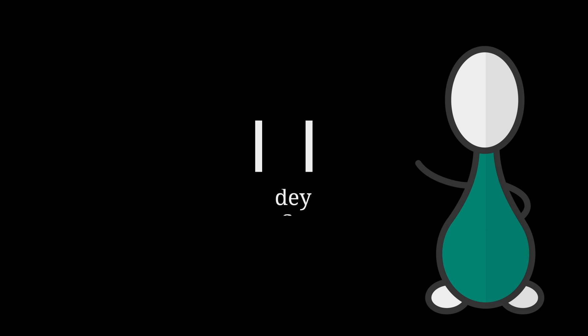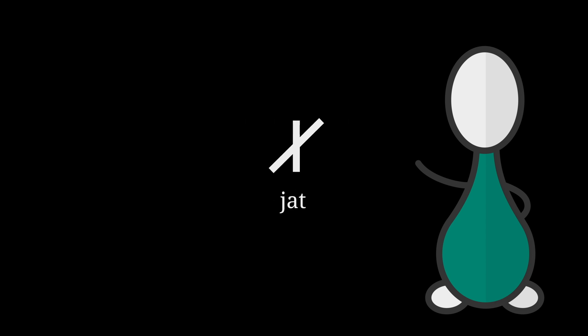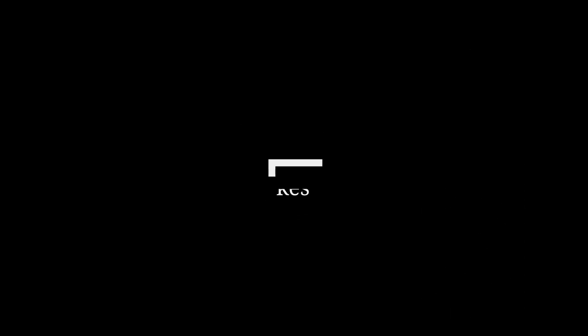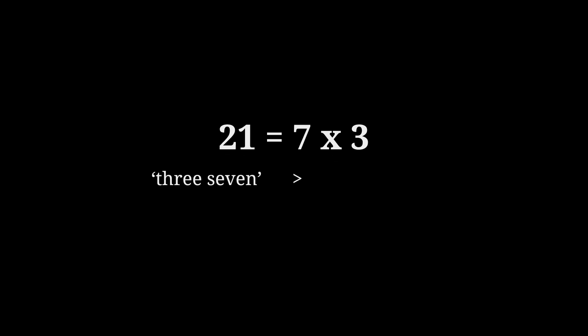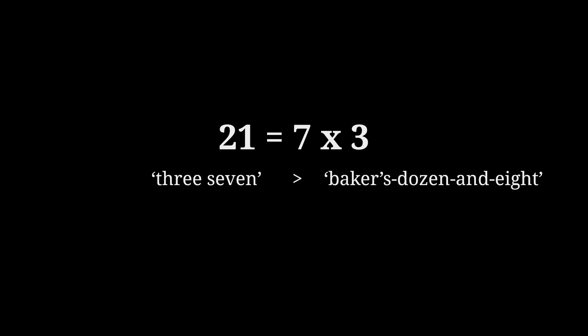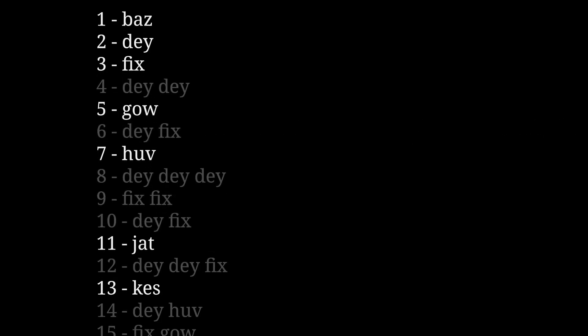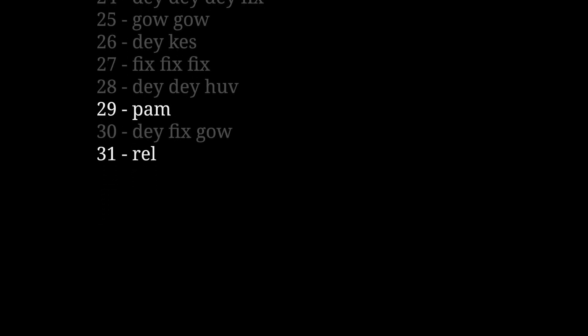We talked a lot about bases last time, so it's worth pointing out that technically a numbering system doesn't even need a base at all. For one, you can just give a unique name and symbol to every single number you come across. A more sophisticated option would be to name numbers according to their prime factorization. In some ways, 3 times 7 is a more useful name than 21, or 33, or 1 baker's dozen and 8. The main problem you'd run into is that you need to name all the primes something, which is pretty much the same problem as needing to name all the powers of a base.